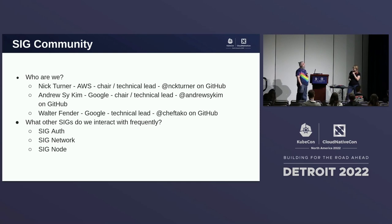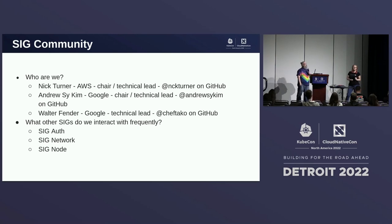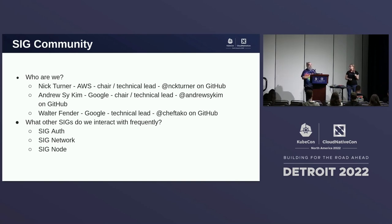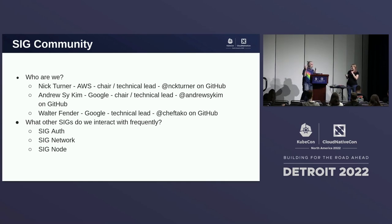We'd also be remiss if we didn't talk about the other SIGs we interact with most. SIG Networking and SIG Node — we do a lot of crossovers there, especially around IPv6, because doing the CCM work we're doing a lot of low-level networking things and coming up with bugs. SIG Node comes up because there's interaction with how new external cloud providers taint and untaint nodes when they become ready. And SIG Auth is another big one, because there's always something going on with credentials.